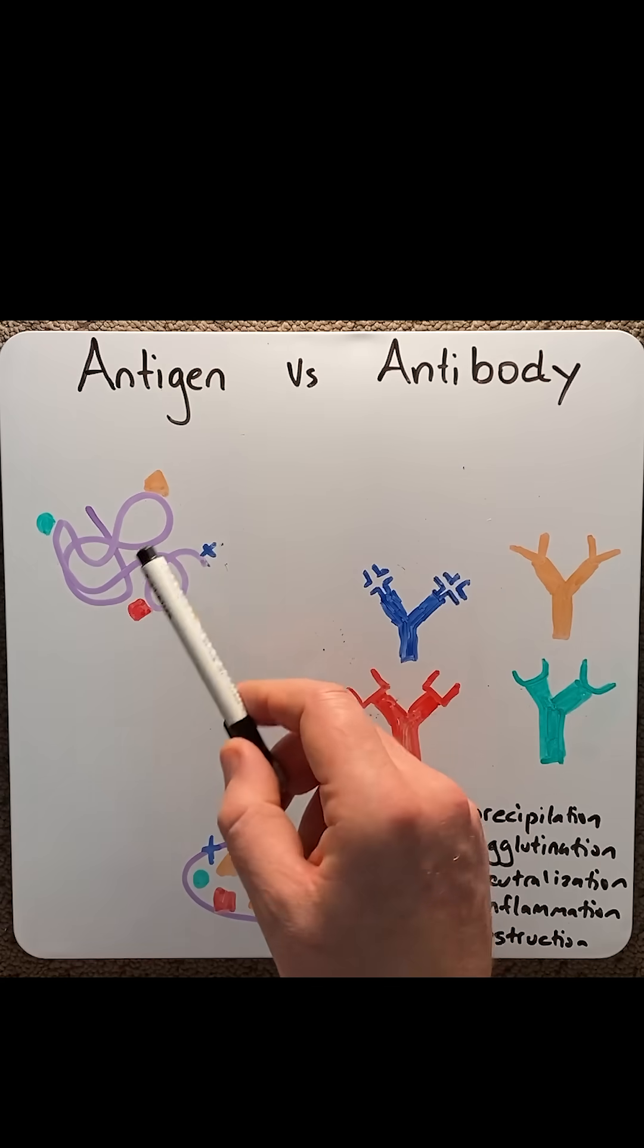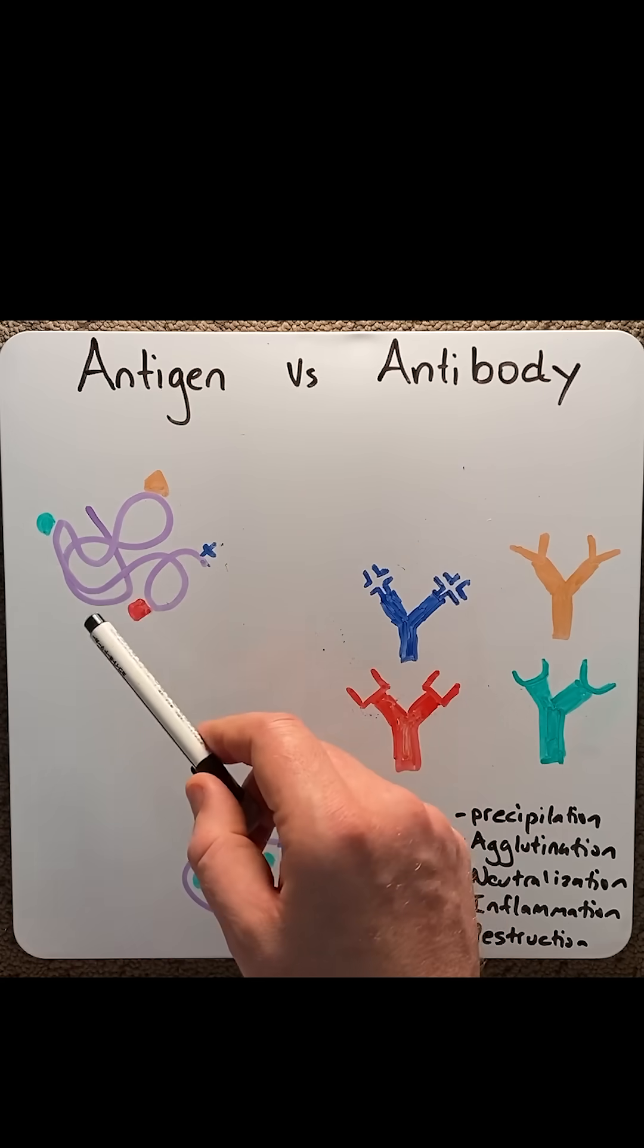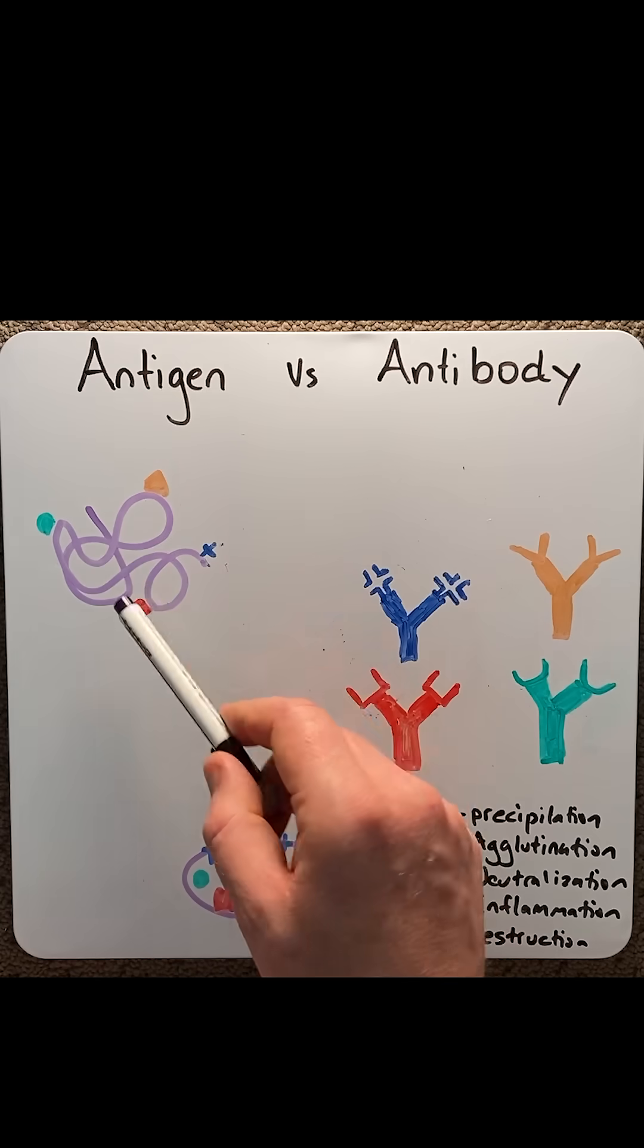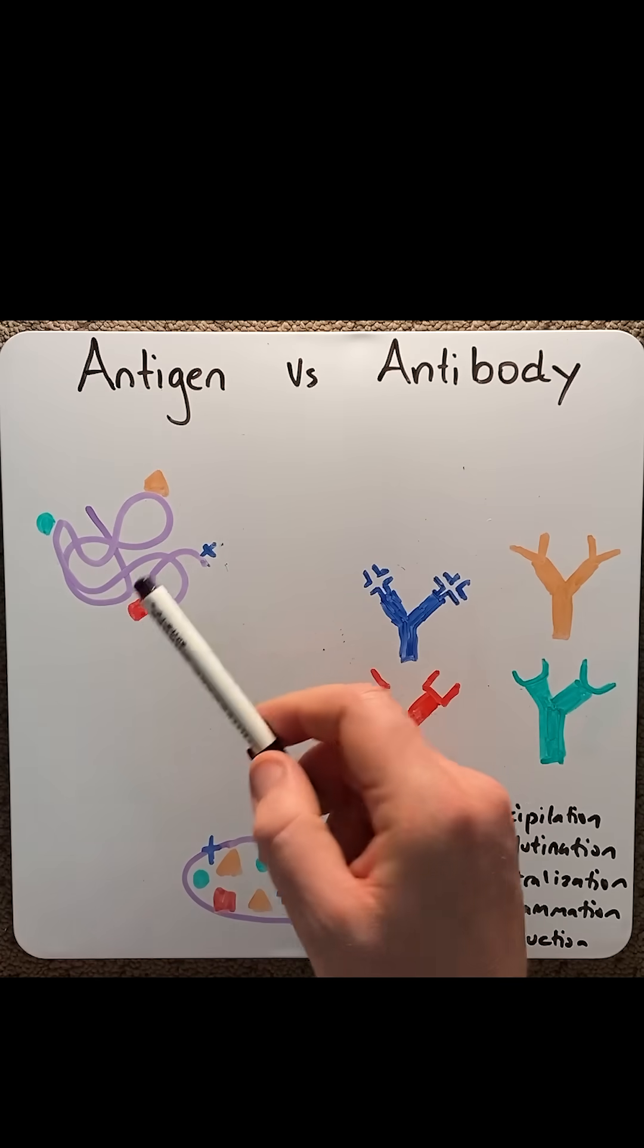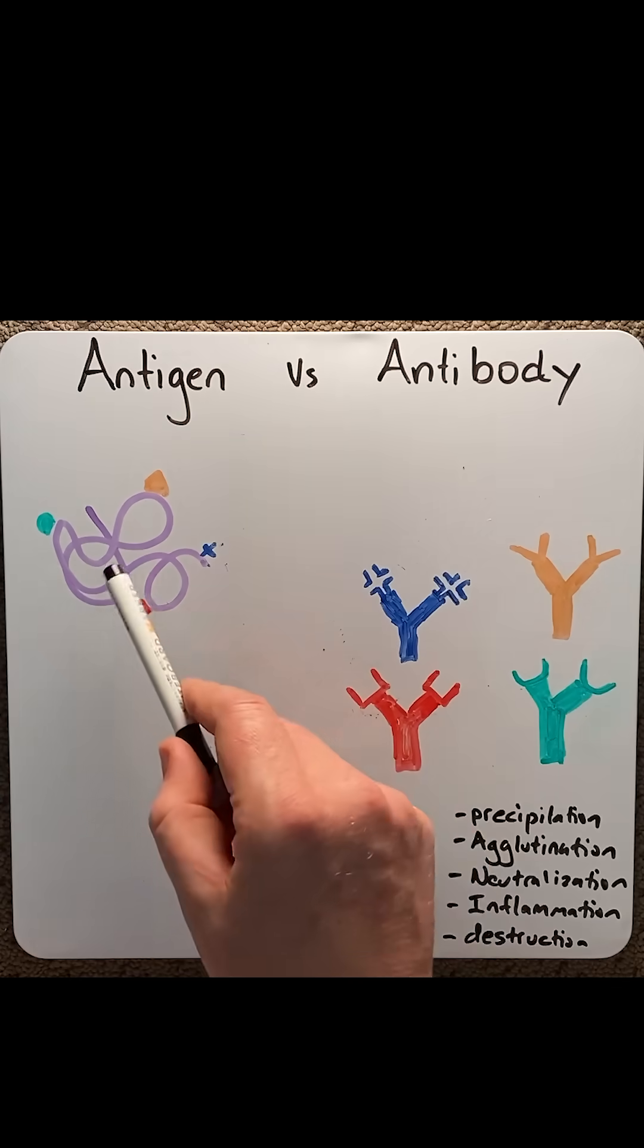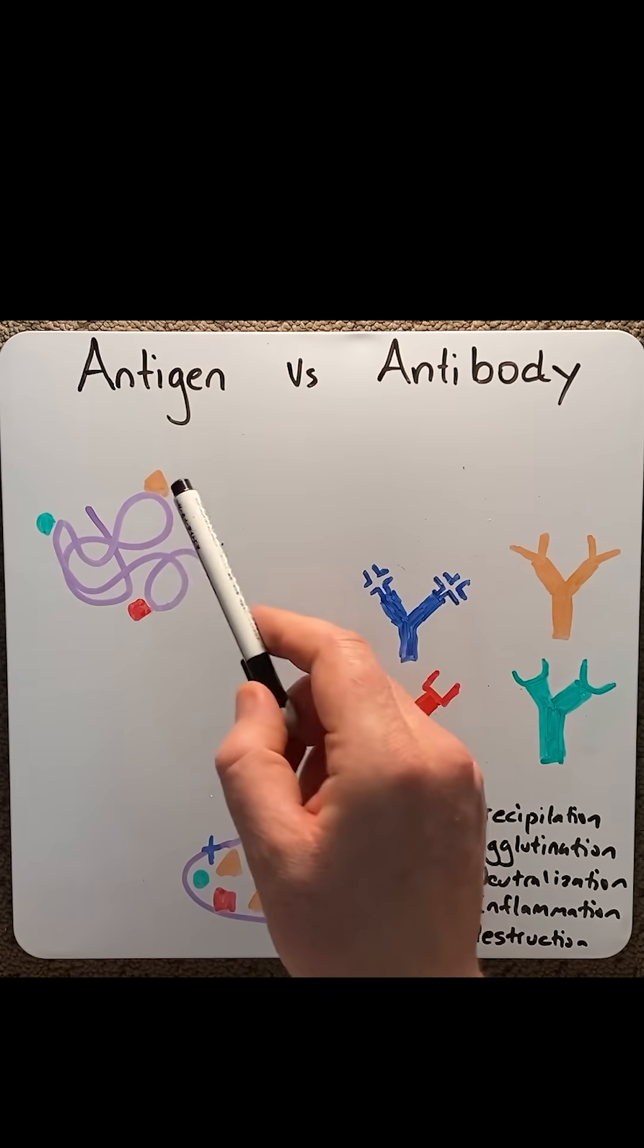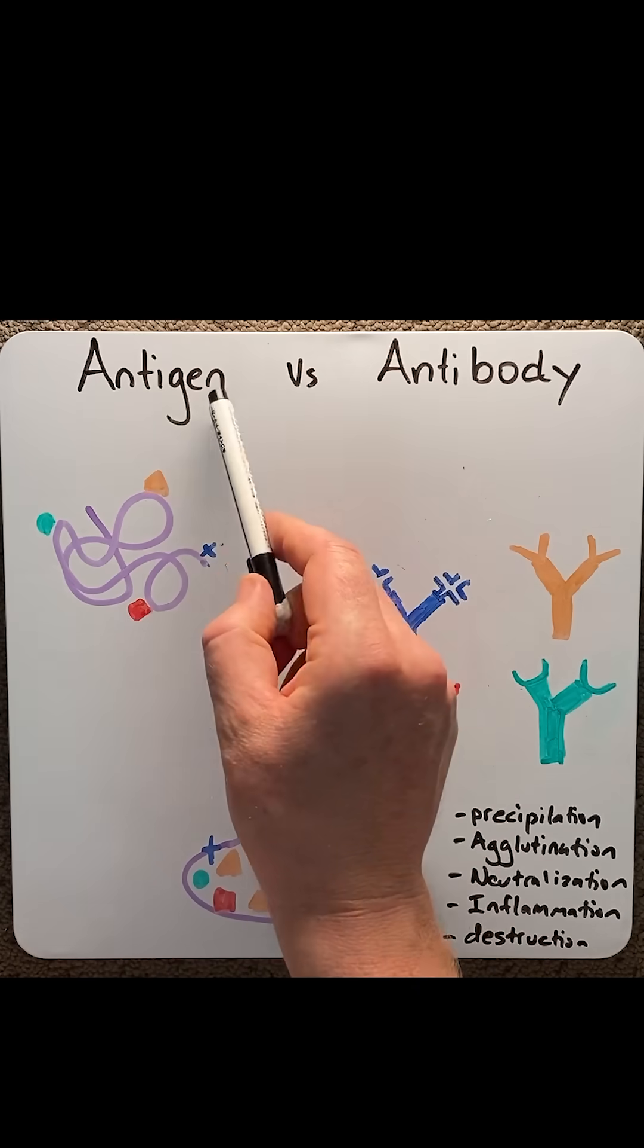Now antigens, illustrated by this purple line, are macromolecules, generally made from proteins or polysaccharides. Antigens are recognized by the immune system as foreign. Therefore, antibodies are produced to bind to these antigens. So the word antigen can be remembered by antibody generator.